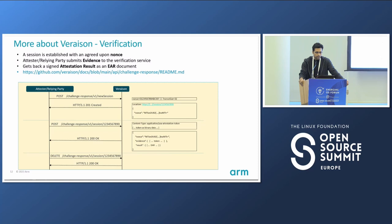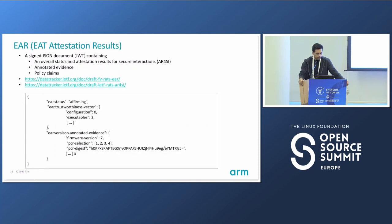In the verification stage, the attester has to create a session with the Veraison service and sends a nonce as part of the request. It gets back a session ID using which it has to further communicate with the Veraison service. Then it sends the evidence, which is appraised and verified, and you get back the attestation results from the Veraison service. The attestation results are in JWT — JSON Web Token — format, which is an IETF draft and will soon be standardized as an RFC.